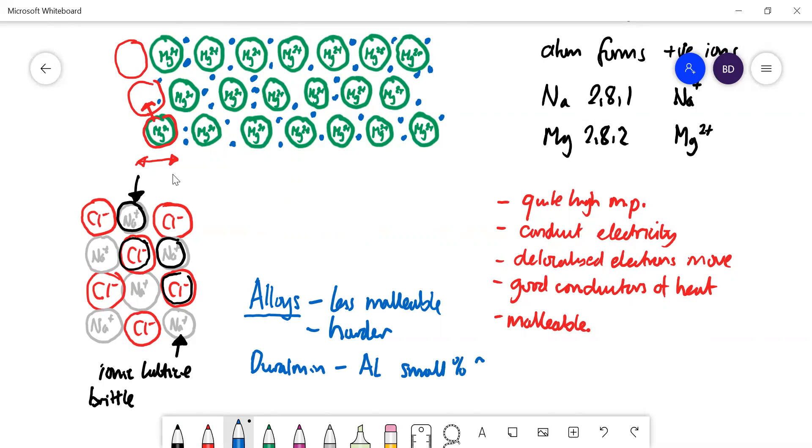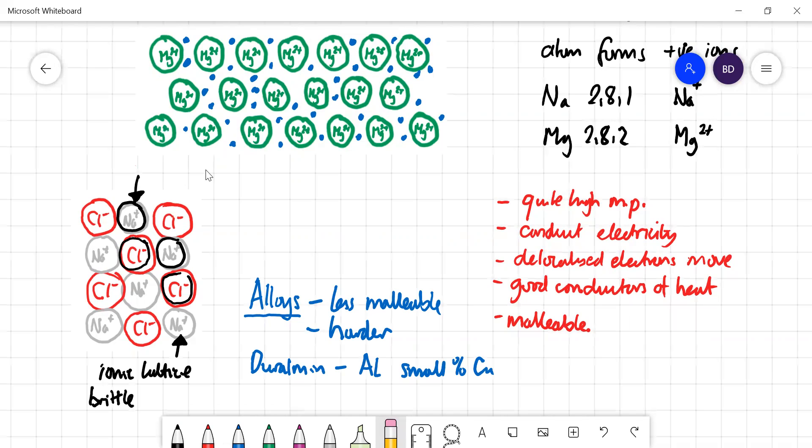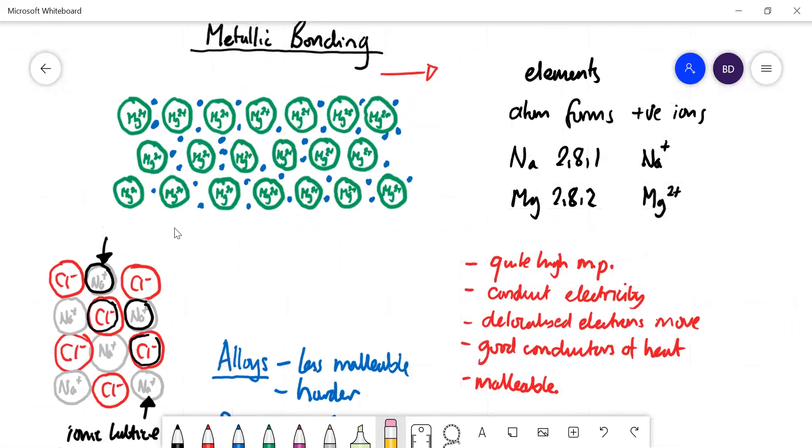Now the way in which alloys, why they make it less malleable, is that if you put a different atom in there, a different metal atom, it's going to be a different ion, it's going to be a different size.